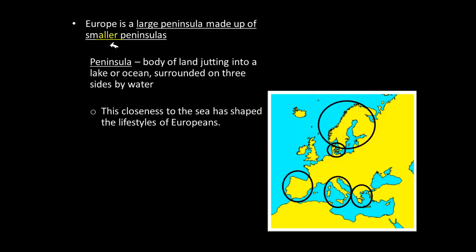The continent of Europe itself is a peninsula — a landmass that juts out into a sea or ocean and is surrounded on three sides by water. Counting them, there are at least five peninsulas that make up the continent of Europe. So Europe is a large peninsula made up of many smaller peninsulas. We'll also touch on how closeness to the sea has shaped the lifestyles of most Europeans.